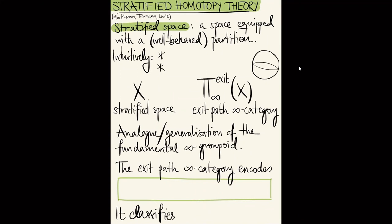As an example, consider the two-sphere stratified by the equator, the upper hemisphere, and the lower hemisphere — three strata. There is an alternative way to think of a stratified space: instead of a space with a partition, we can think of it as a collection of spaces or strata together with some gluing data specifying how these spaces fit together. In this example, I have a circle and two open disks; the gluing data says the open disks are glued to the circle along a tubular neighborhood around that circle.